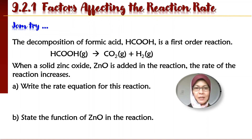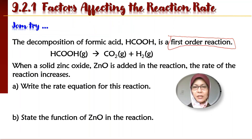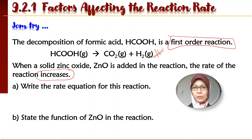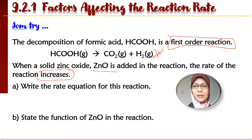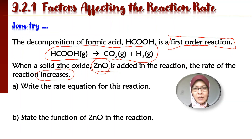Jom cuba satu contoh. The decomposition of formic acid is a first order reaction. Equation telah diberi dalam soalan. When a solid zinc oxide is added to the reaction, the rate of reaction increases. Zinc oxide tidak ada pun di dalam reaction ini — it is not part of the reactant. Tetapi bila zinc oxide ditambah, rate of reaction increases. So immediately you tahu zinc oxide ini adalah catalyst, because it only alters the rate and it is not part of the reaction.